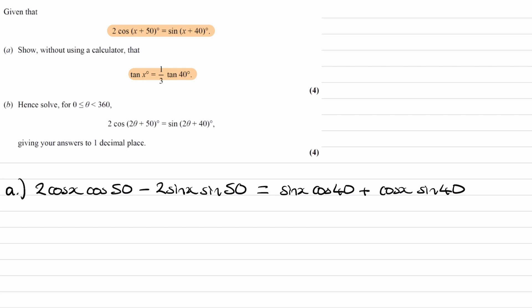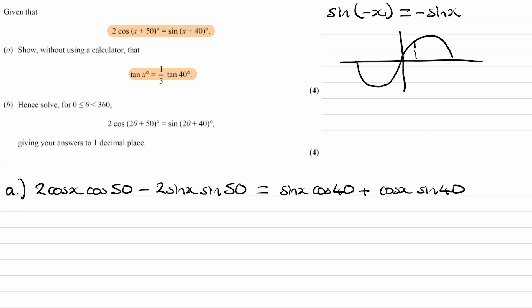We can do that using a couple of rules. The first rule is that sin(−x) = −sin(x). To see why, consider a sine curve: sin(30) is a half, and sin(−30) is minus a half. So sin(−30) equals −sin(30) — put a minus sign in front of sin(30) to get minus a half.